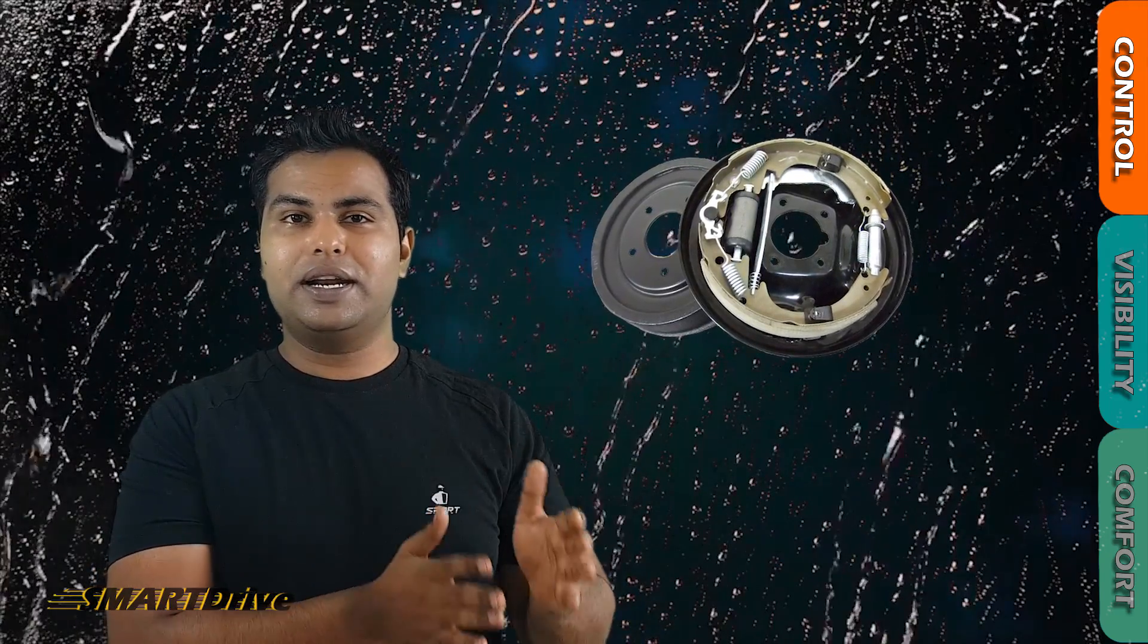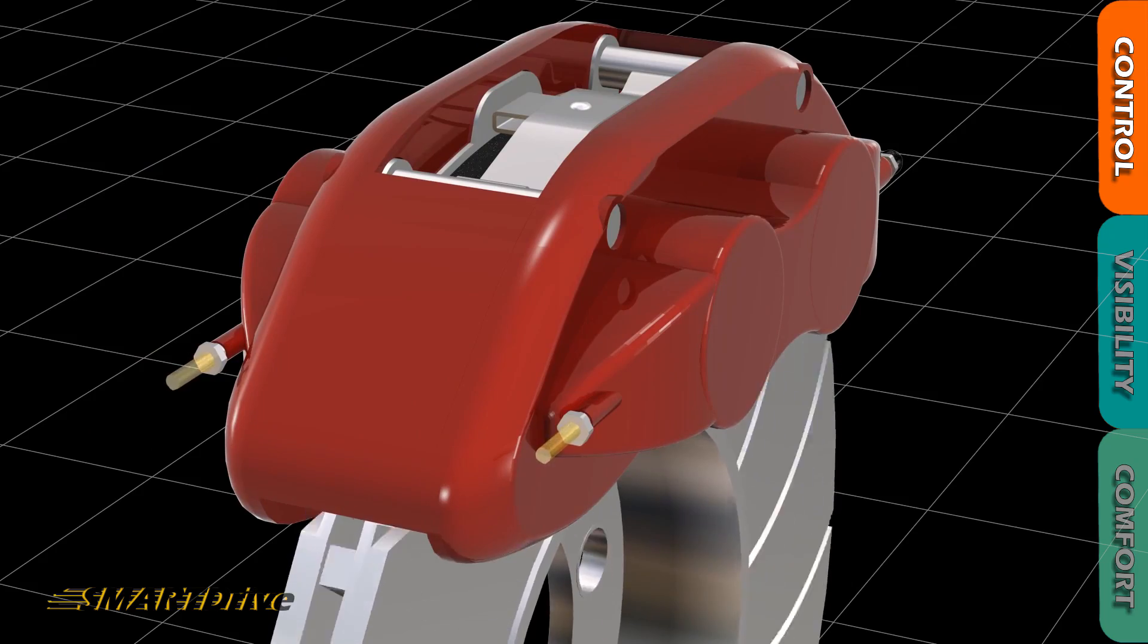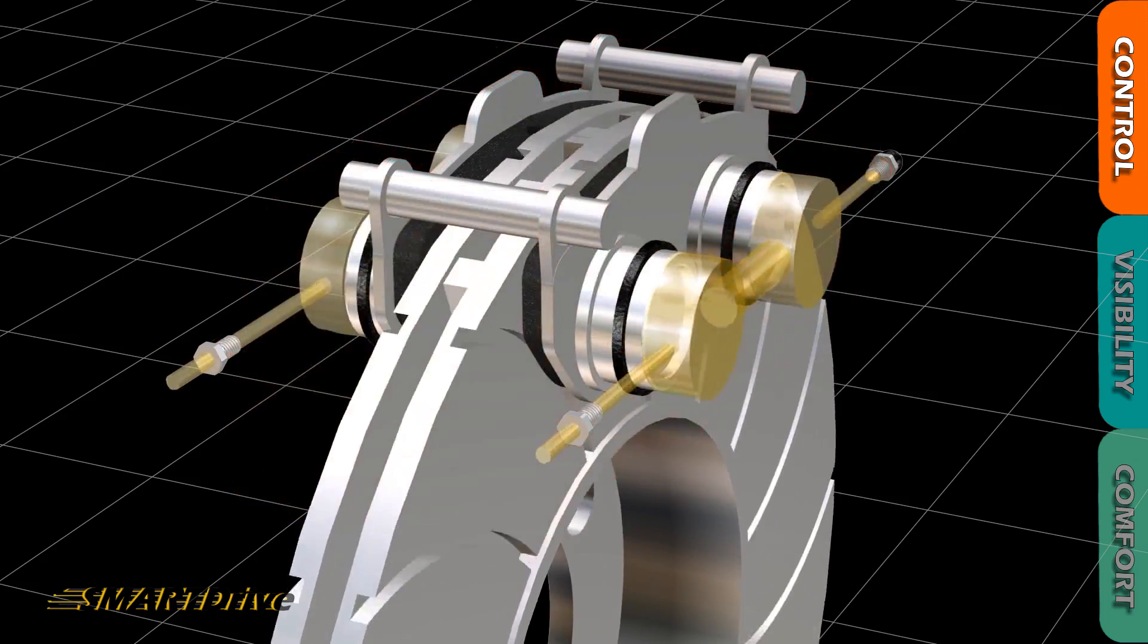While talking about the brakes, the brakes are of two types. First is the regular drum brake, which is the traditional old technology, and the new is the disc brake. The disc brakes are more reliable as if you are applying the brakes and the disc pad is sticking to the disc.